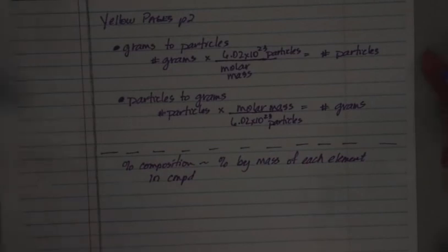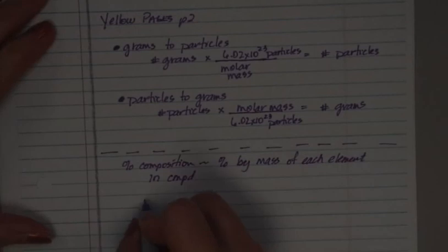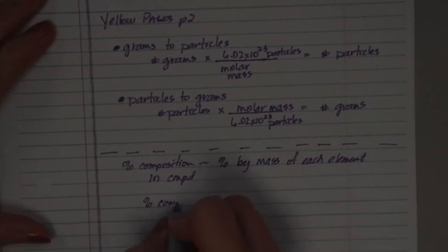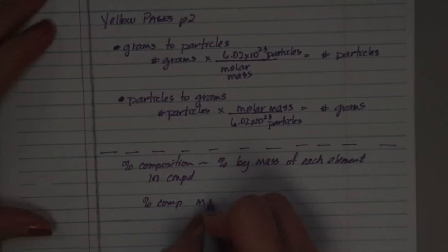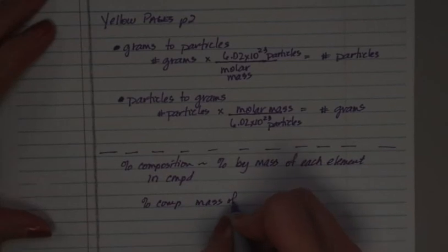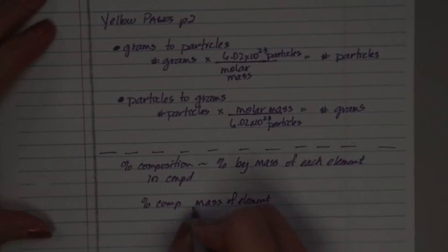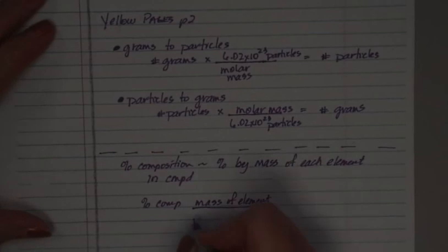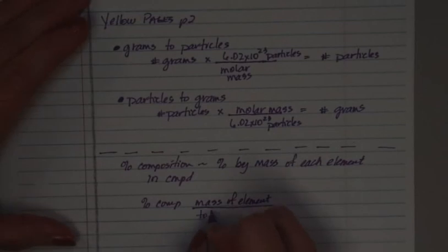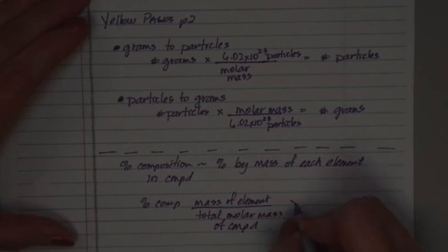You could even do that for, you know, pizza. What percent of the composition of pizza is this sauce made up of? So you'd have to mass everything out and then figure out what it was. So when you do percent composition, what you're going to do is you're going to say the mass of the element that you're interested in divided by the total molar mass of the compound. And it's a percent, so then times 100. And that's what's going to equal percent composition.